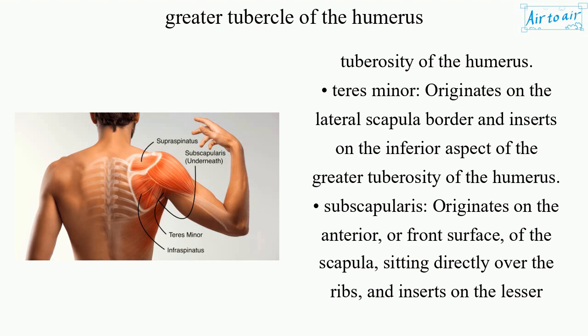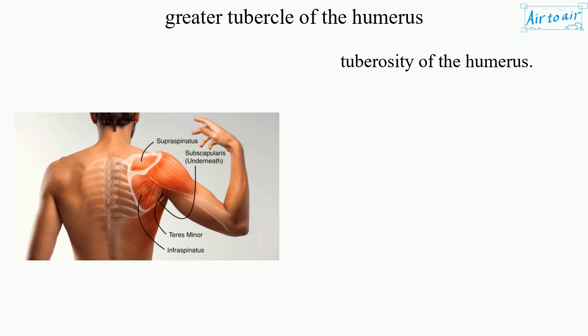The teres minor originates on the lateral scapula border and inserts on the inferior aspect of the greater tuberosity of the humerus. The subscapularis originates on the anterior surface of the scapula, sitting directly over the ribs, and inserts on the lesser tuberosity of the humerus.